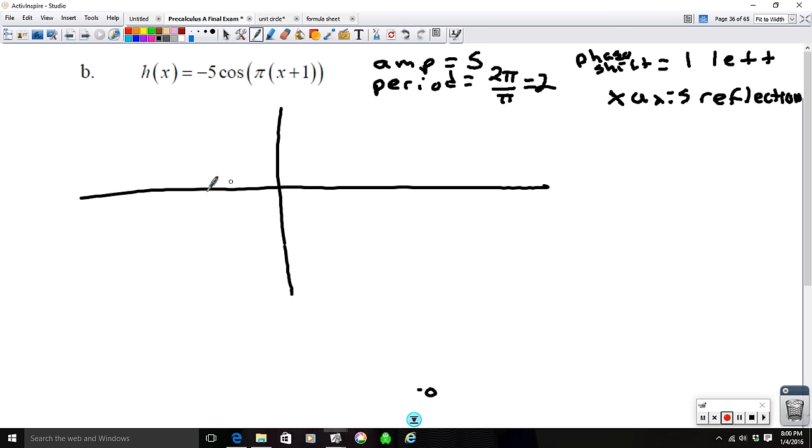Okay, so we didn't have a d value other than 0, so that's going to put our d at 0. Our phase shift is 1 to the left, so this is going to start over here at negative 1. It's going to have a period of 2. This is 1 and 1. So if you break that in half, this is negative 1 half. This is positive 1 half.